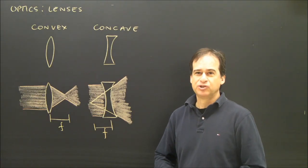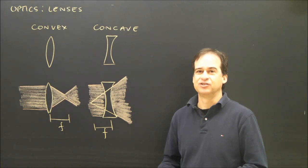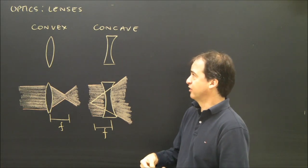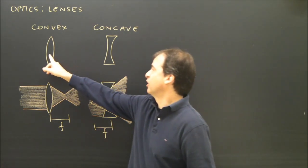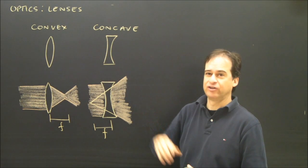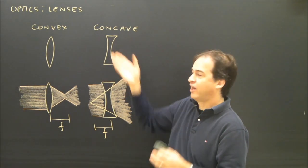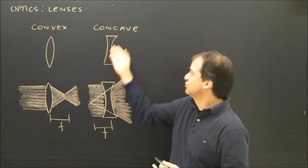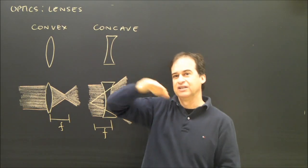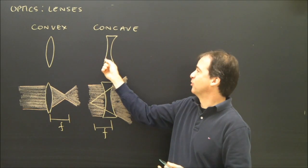Before we look at ray diagrams, we should get a simple idea of how lenses work. I've got two different types of lenses here. There are two main types: convex and concave. Convex is curved outward, concave is curved inward. You can sort of think of this as if you tip it over, it's like a cave. So that's how I remember concave.